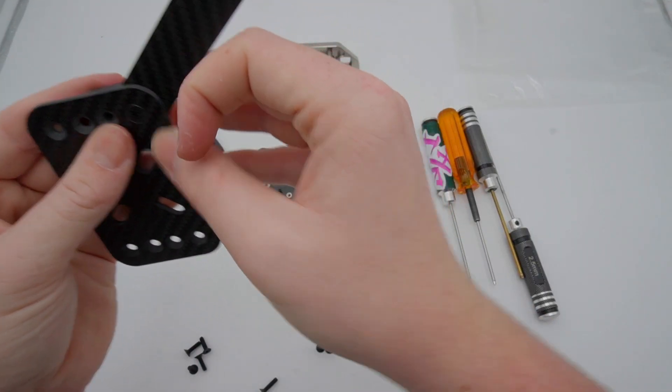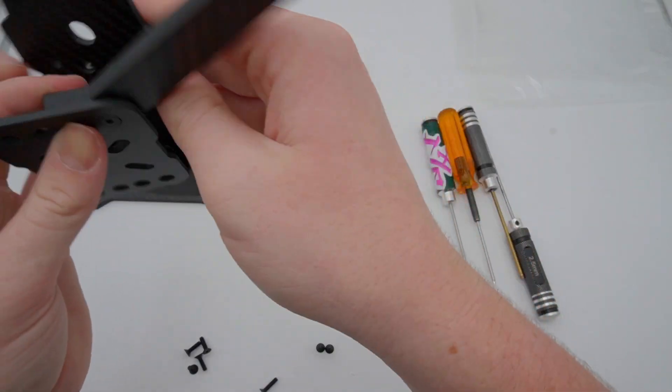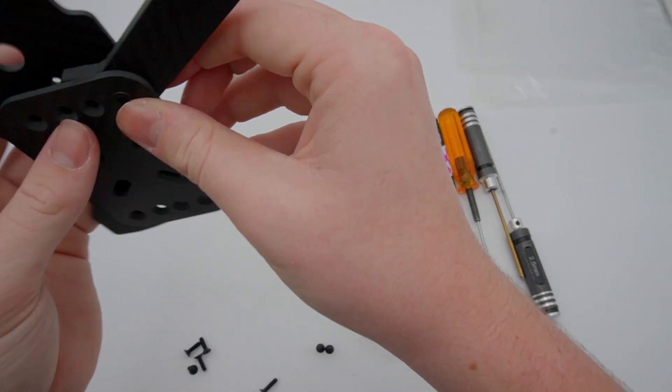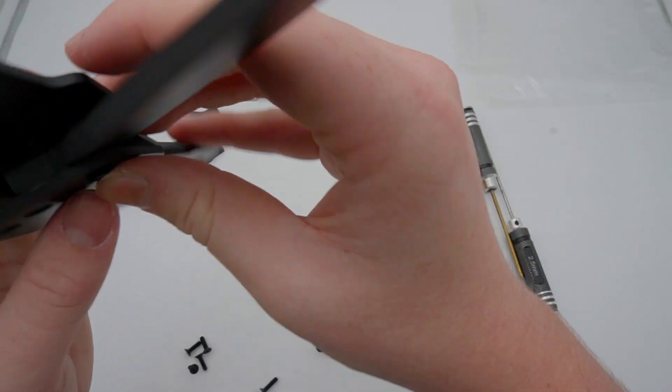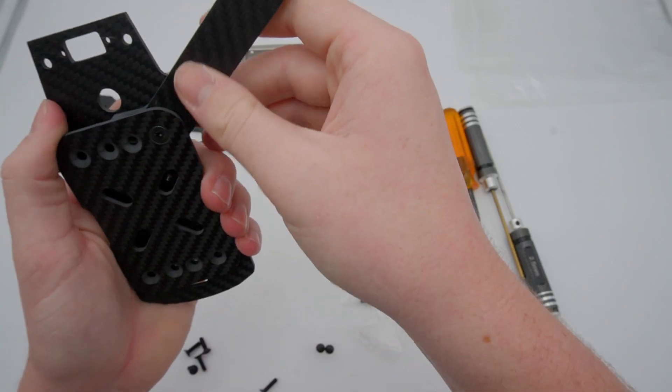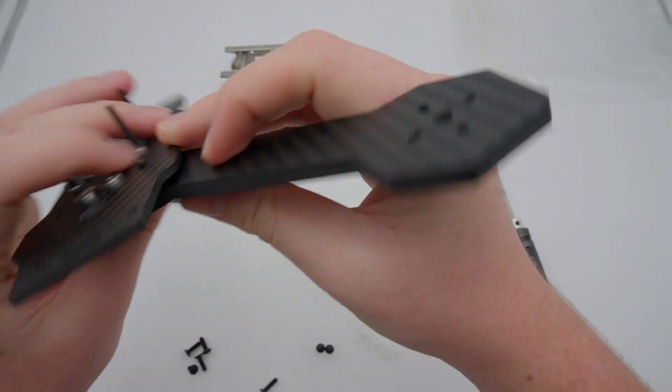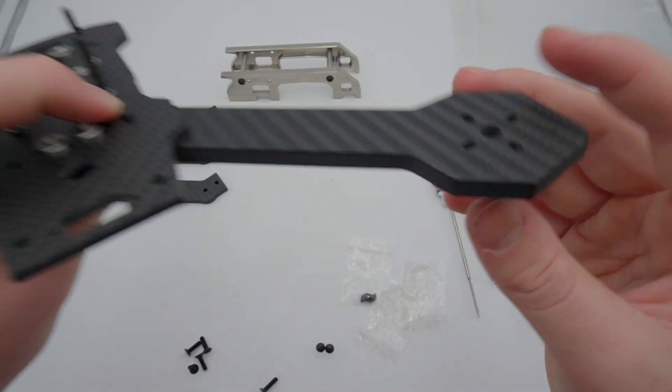And you're going to get your longer screw that you were provided with, place that on the outside. And then you're going to get your mid plate. And you're going to thread it straight through. It actually doesn't matter what orientation you put this on. So you can just put it on your mid plate and it's going to go straight through the frame just like this.